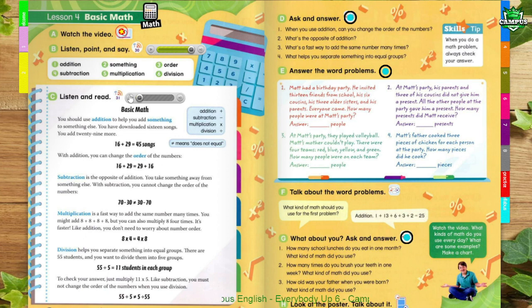Page 18. See, Listen, and Read: Basic Math. You should use addition to help you add something to something else. You have downloaded 16 songs. You add 29 more. 16 plus 29 equals 45 songs. With addition, you can change the order of the numbers. 16 plus 29 equals 29 plus 16.